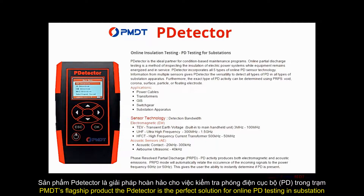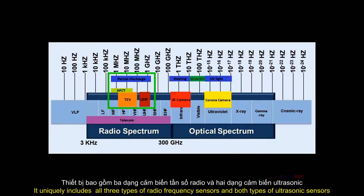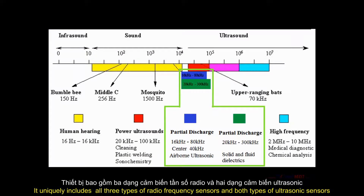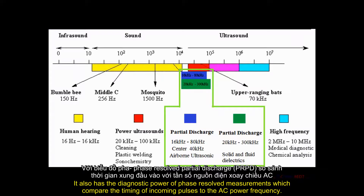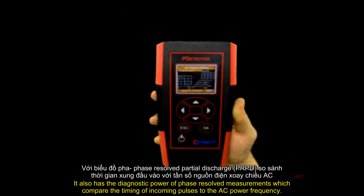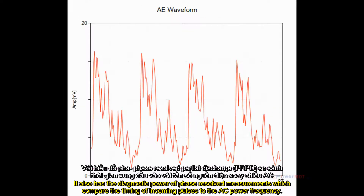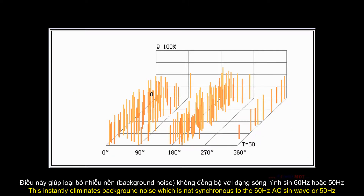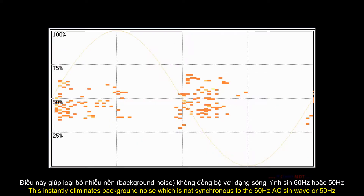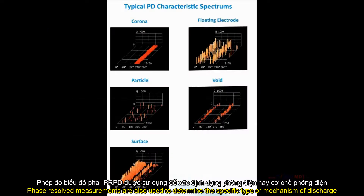PMDT's flagship product, the PDtector, is the perfect solution for online PD testing in substations. It uniquely includes all three types of radio frequency sensors and both types of ultrasonic sensors. It also has the diagnostic power of phase-resolved measurements, which compare the timing of incoming pulses to the AC power frequency — instantly eliminating background noise not synchronous to the 60 Hz AC sine wave. Phase-resolved measurements are also used to determine the specific type or mechanism of discharge.